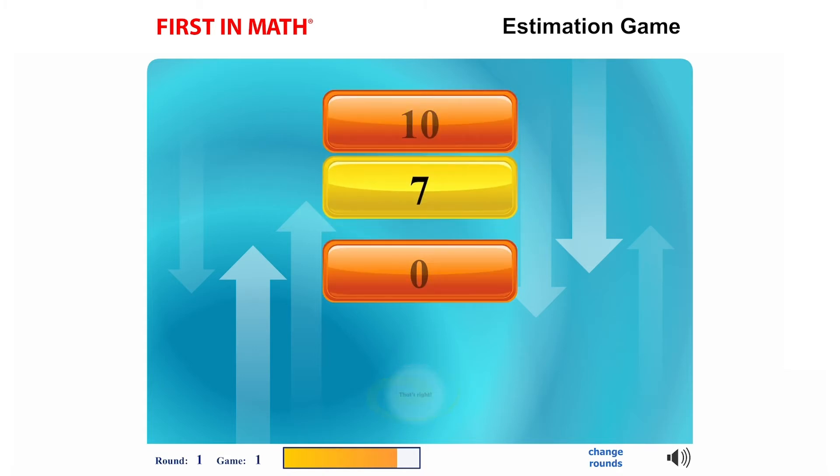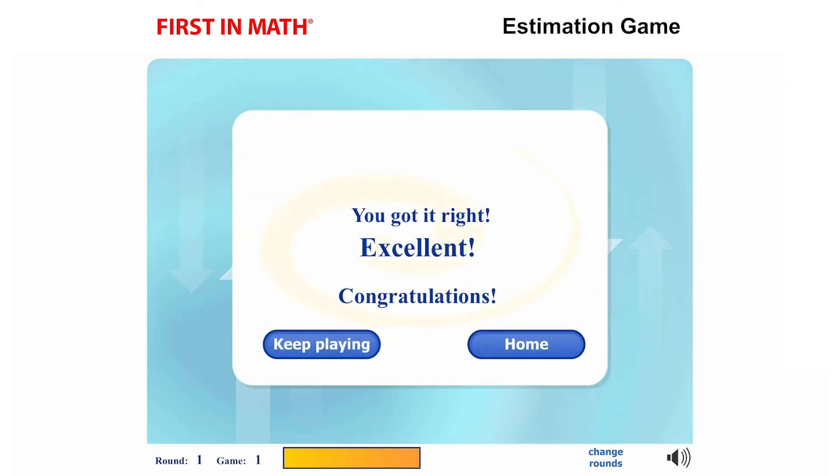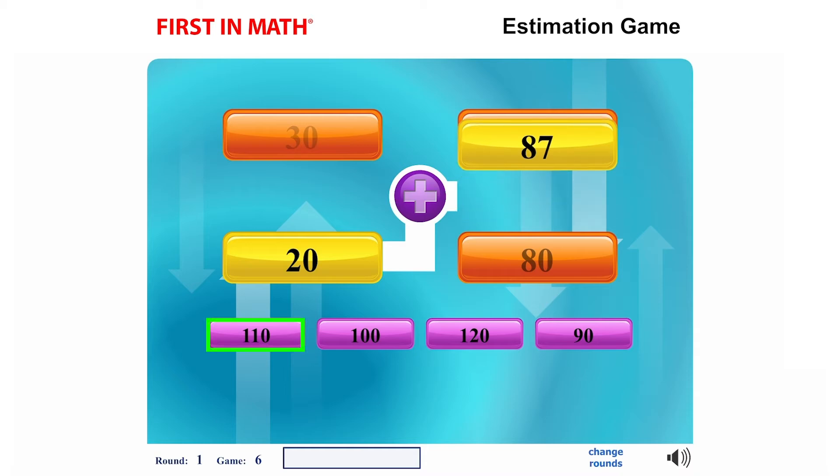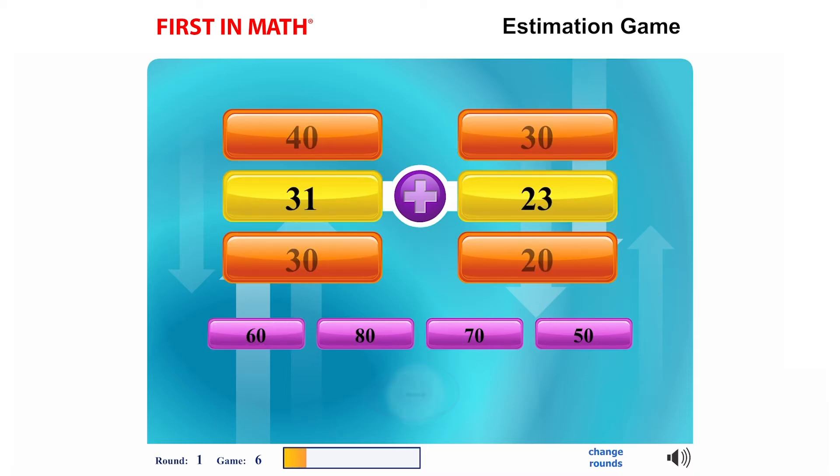But as you move on to games six through ten, two numbers will need to be rounded and then added together to find the estimated total. You will select the answer for the total by choosing a purple number below.